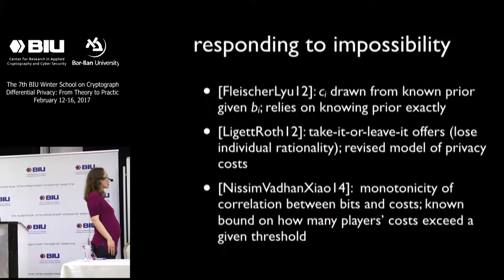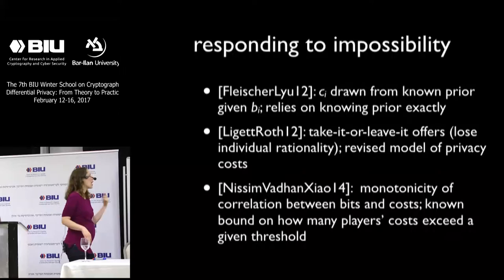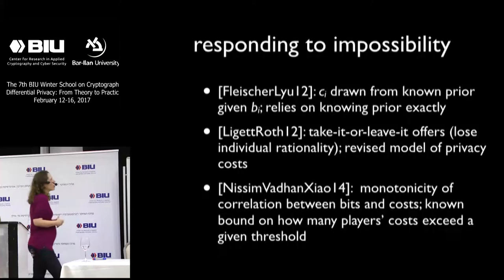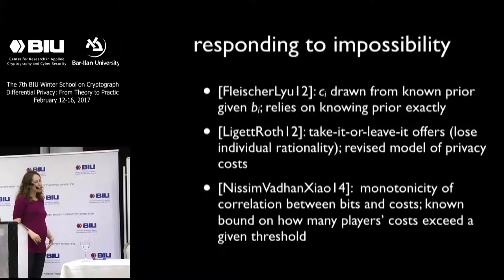In Nissim, Vidan, and Shao, they show that if they make some additional assumptions — a monotonicity of correlation between bits and costs, and if they have access to a known bound on how many players' costs exceed a given threshold — they can also get some positive statements. So there are a bunch of different ways to try to address these concerns about correlations between values and bits.